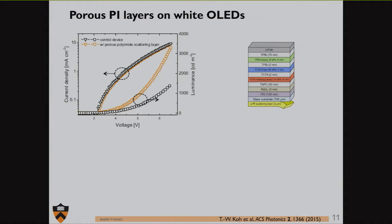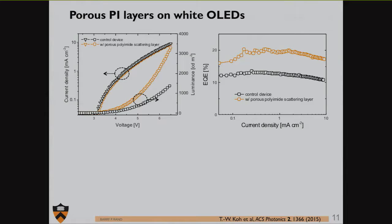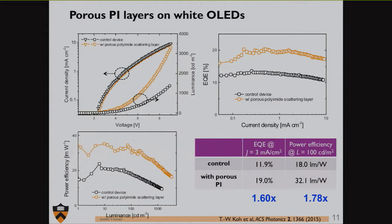But it has a very large impact on the amount of light that gets out. Here we see the device with that porous layer has much more light at a corresponding voltage point than the device without it. We can show that as a function of quantum efficiency. This is the number of photons out per incident electron hole pair. We get a boost of about 60% of external quantum efficiency just by placing this simple scattering layer on the backside of the substrate, and a corresponding boost to the power efficiency of about 78%.